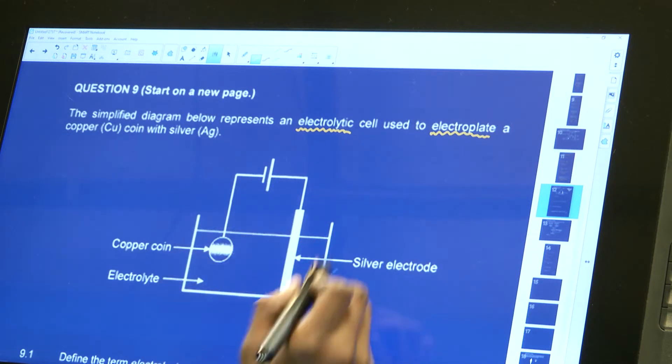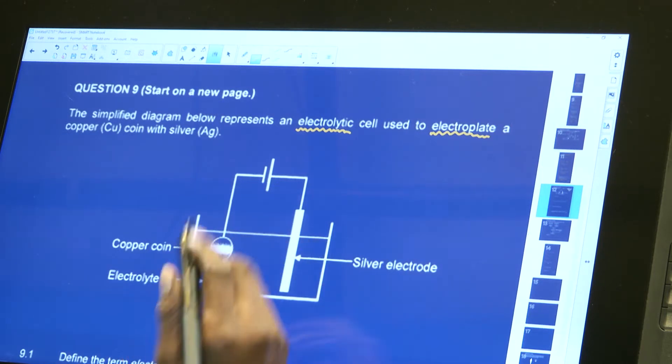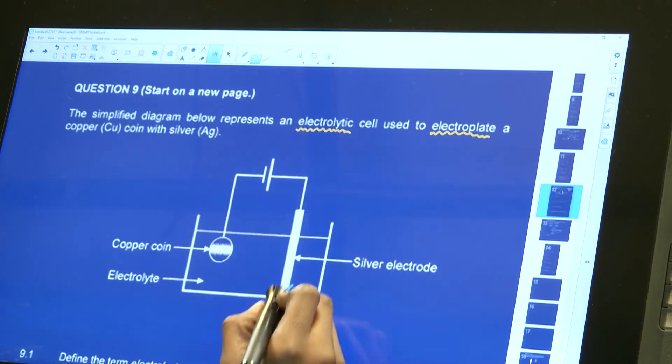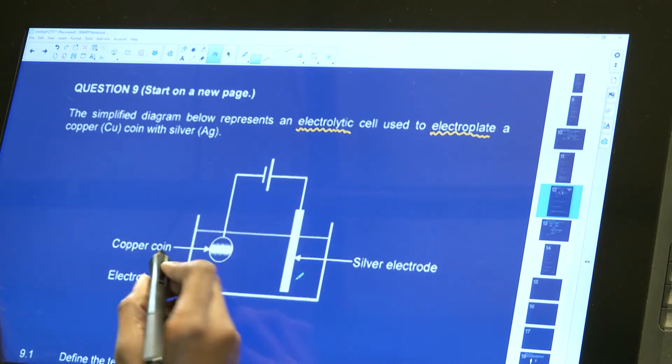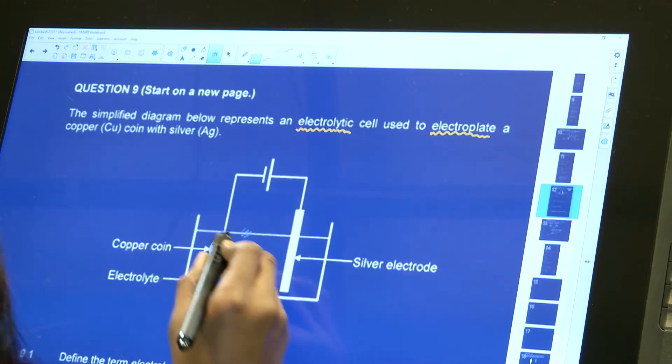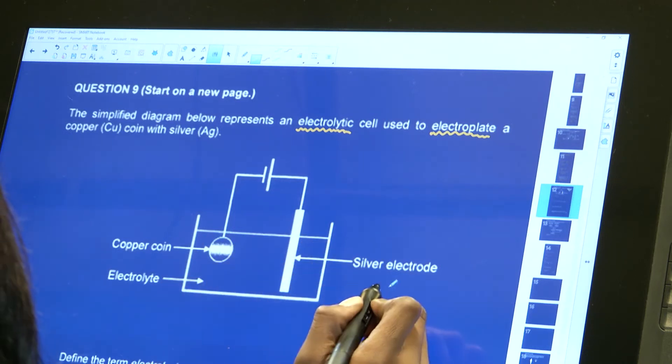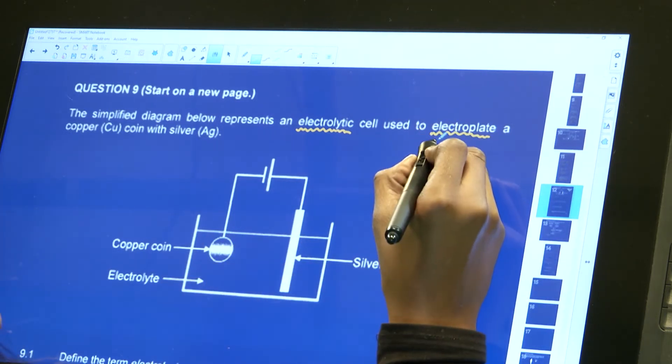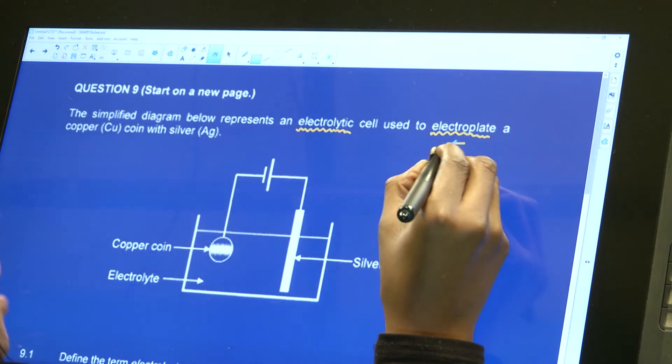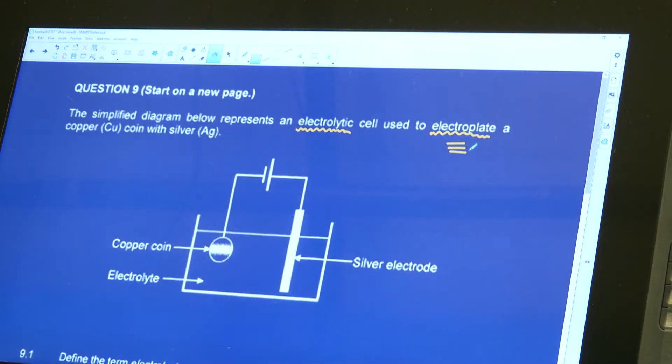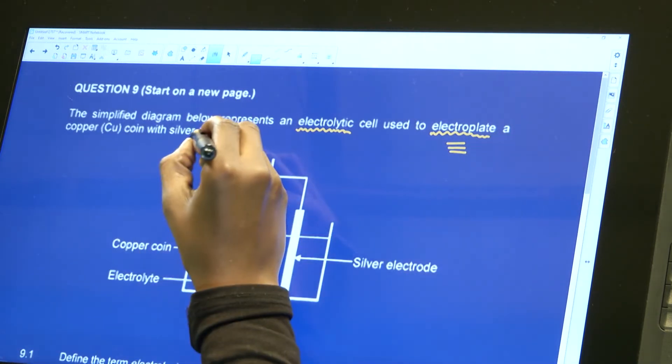Both the objects in question, which will be your anode and your electrode, will both be in one beaker and both in the same solution. In this case, this is a copper electrode, this is a copper coin, and we need to coat this copper coin with silver. We call this electroplating of a copper coin with silver.